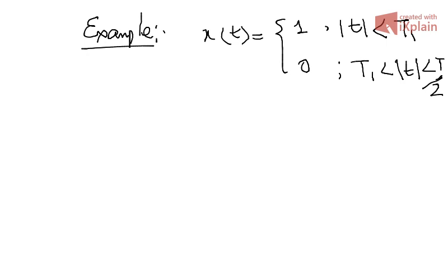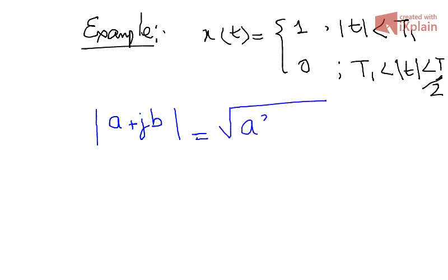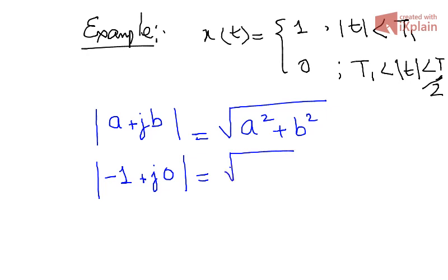Before solving, let's review the modulus operation. If you have a complex number a + jb, its modulus is √(a² + b²). For example, |−1| = √((−1)² + 0²) = 1. Any negative number has a positive modulus. The magnitude is always positive — keep this in mind when we say |t| < T₁.